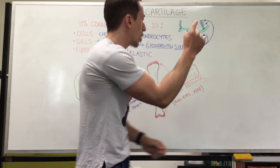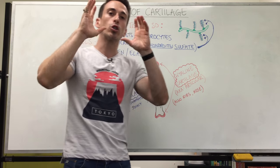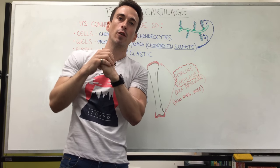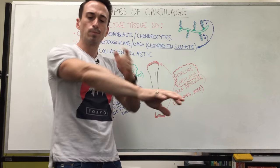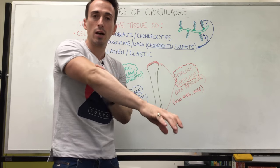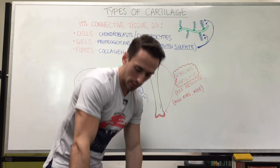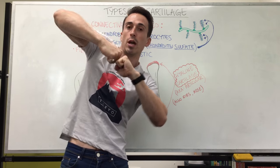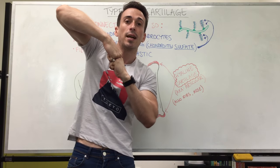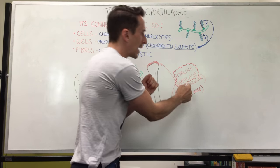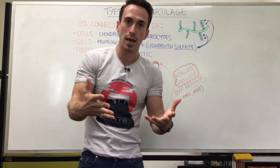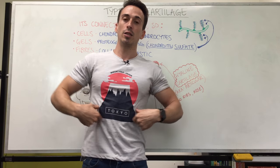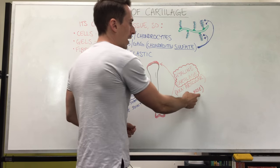The last type is hyaline cartilage — the most common and most abundant type in the body. It lines the articulating surfaces of long bones, which is why it's also called articular cartilage. When one bone interfaces with another bone at a joint, that's an articulation. You'll also find hyaline cartilage at the ribs — at the cartilage portion — and also at the nose.